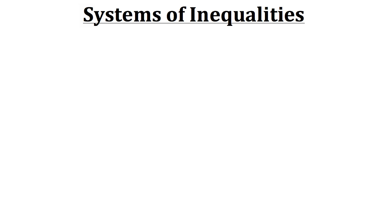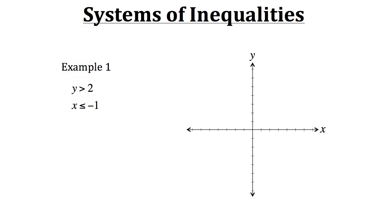Now let's look at some examples so we get a better understanding of what this really is. To start off, let's look at example 1. Here we have a system of two inequalities: y is greater than 2, and x is less than or equal to negative 1.